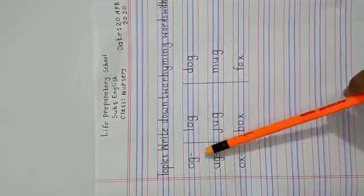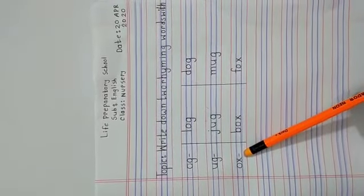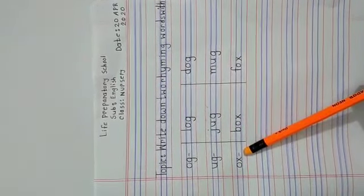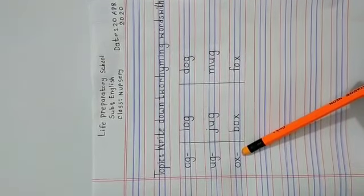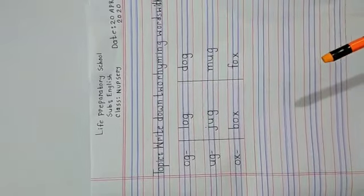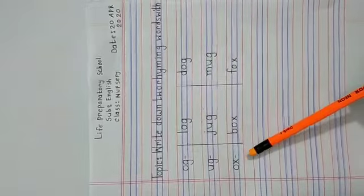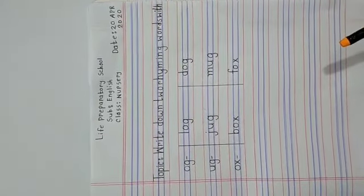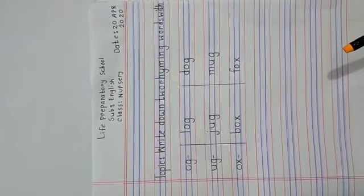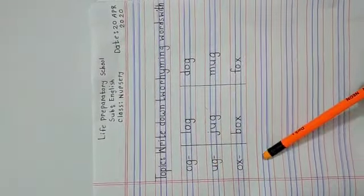O-G, U-G, O-X. You know rhyming words always start with a small letter. You also know O-G, U-G, and O-X is not word. So we will make word by O-G, U-G, and O-X.